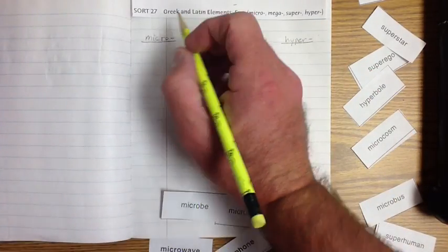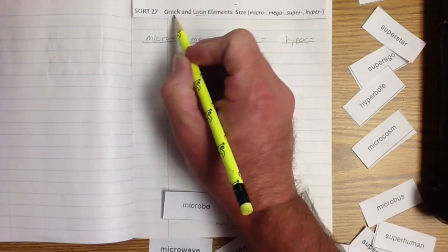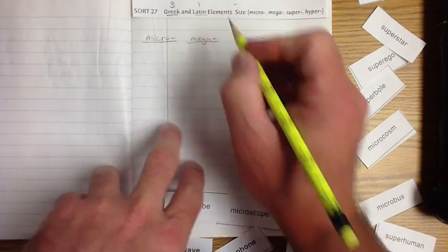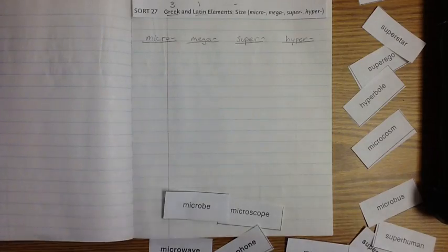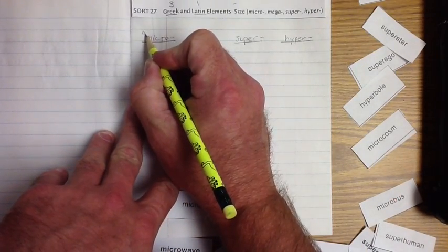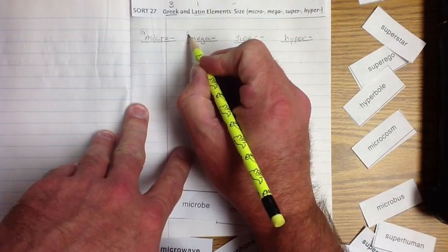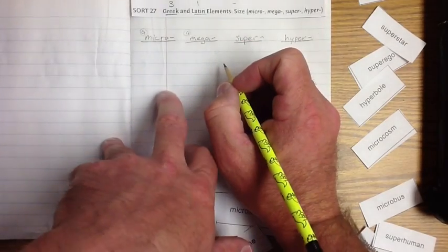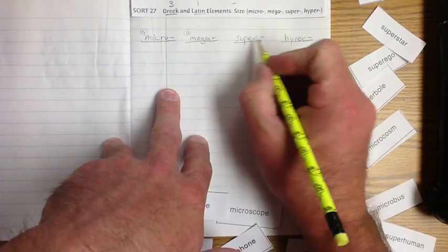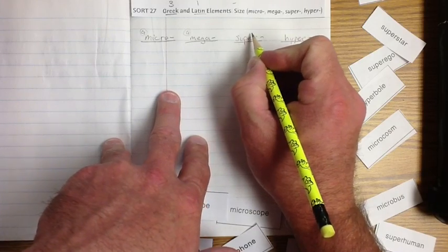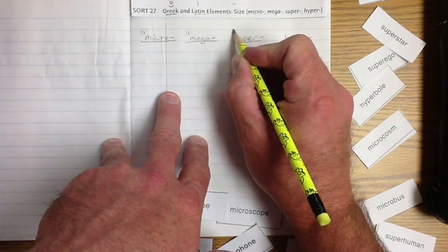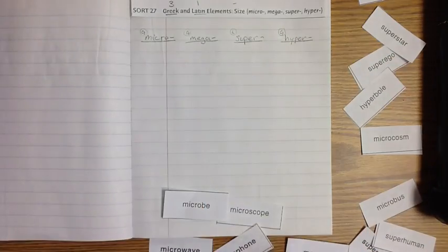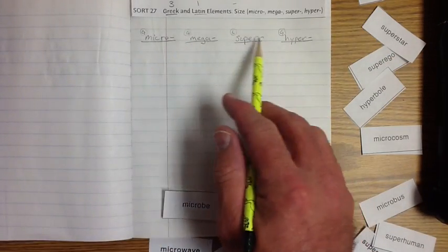So let's look at what we've got here. We've got Greek, we've got Latin, and this week we actually have three Greek and one Latin. So this one's a Greek word, so we're going to put a G by that. But mega is actually a G word, which is Greek. Excellent. Super is actually a Latin word, and hyper is actually the other Greek word.